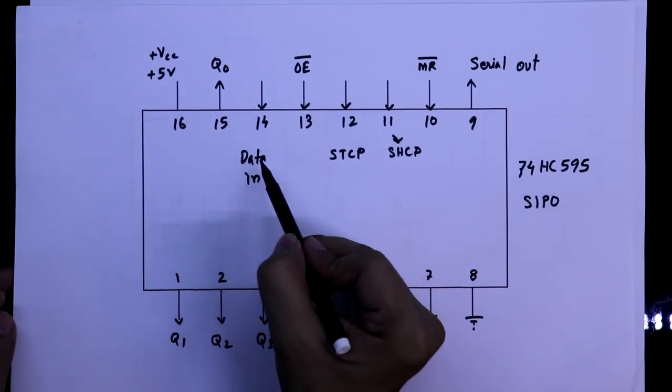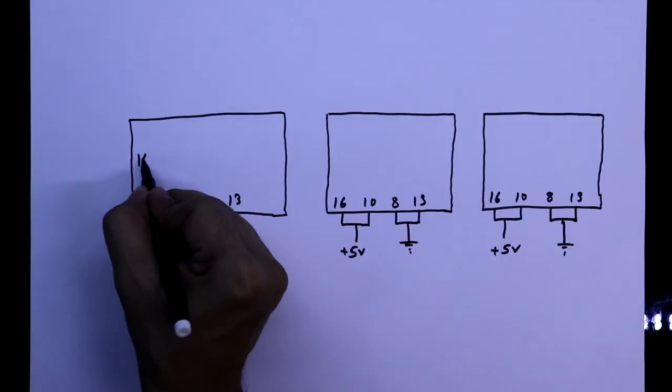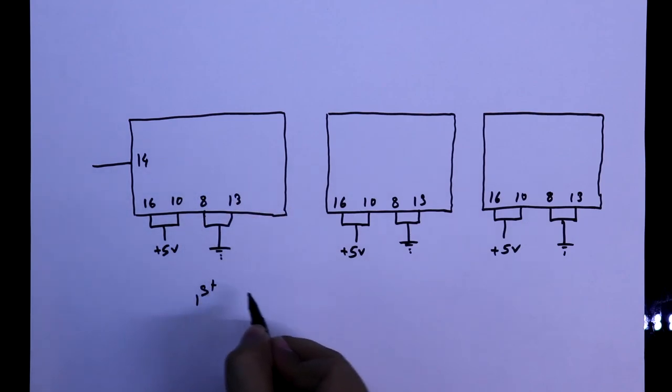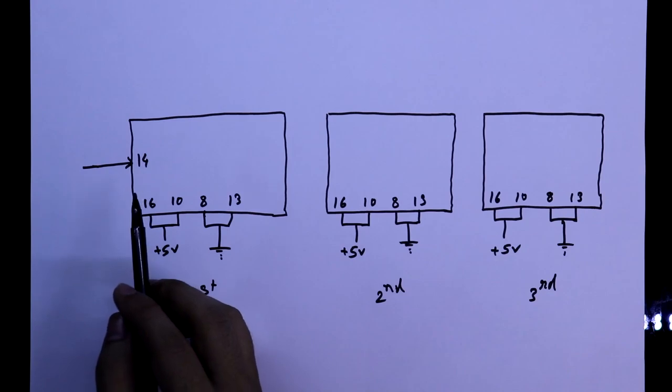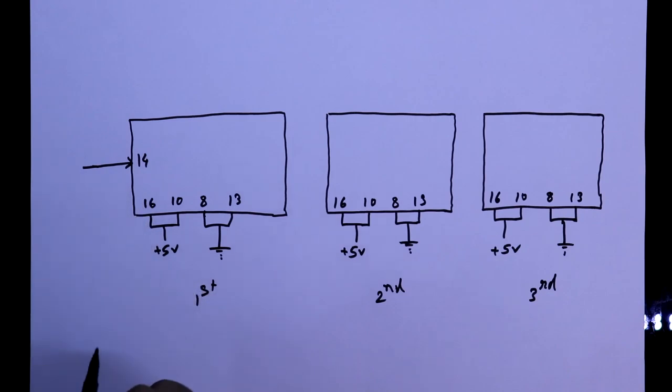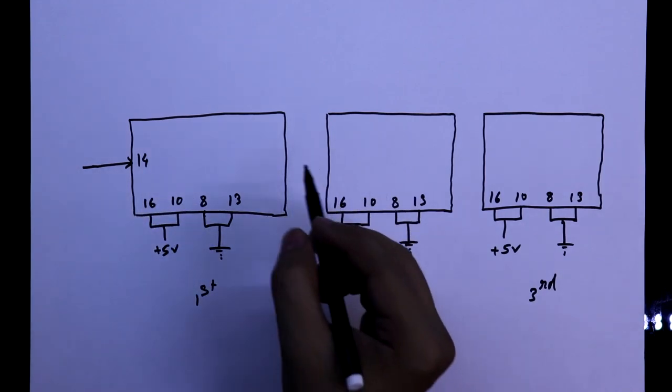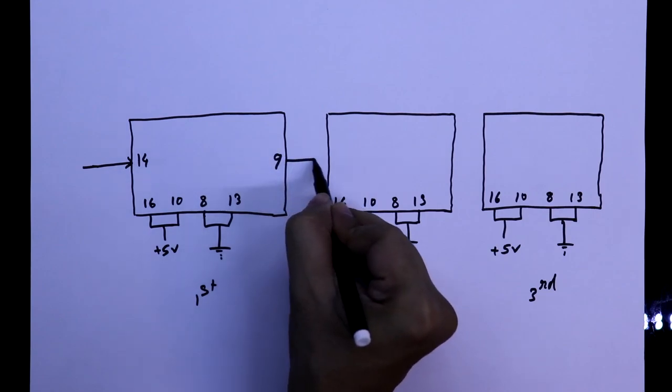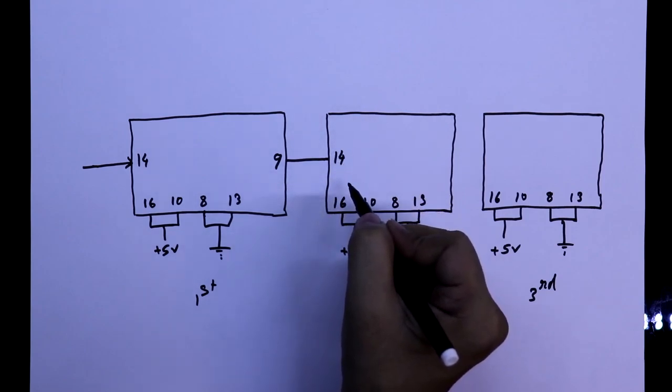Pin 14 is data in and pin 9 is serial out. This is the first IC. This one is second and it is third IC. This will get the data from microcontroller or any other digital IC. To send this data to the next IC, we have to use pin number 9 that is serial out. And this will be connected to the pin number 14 of next IC.